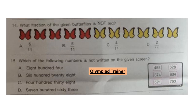Question 14: What fraction of the given butterflies is not red? First count the total number of butterflies, then count the number of butterflies which are not red. The fraction will be option A: 6 by 11.